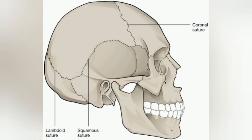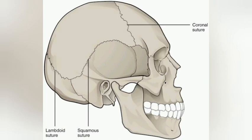Then we have the second one: the sagittal suture. The sagittal suture, as the name implies, is a joint found between the two parietal bones — between the right and left parietal bones. There is a suture joint between them called the sagittal suture.